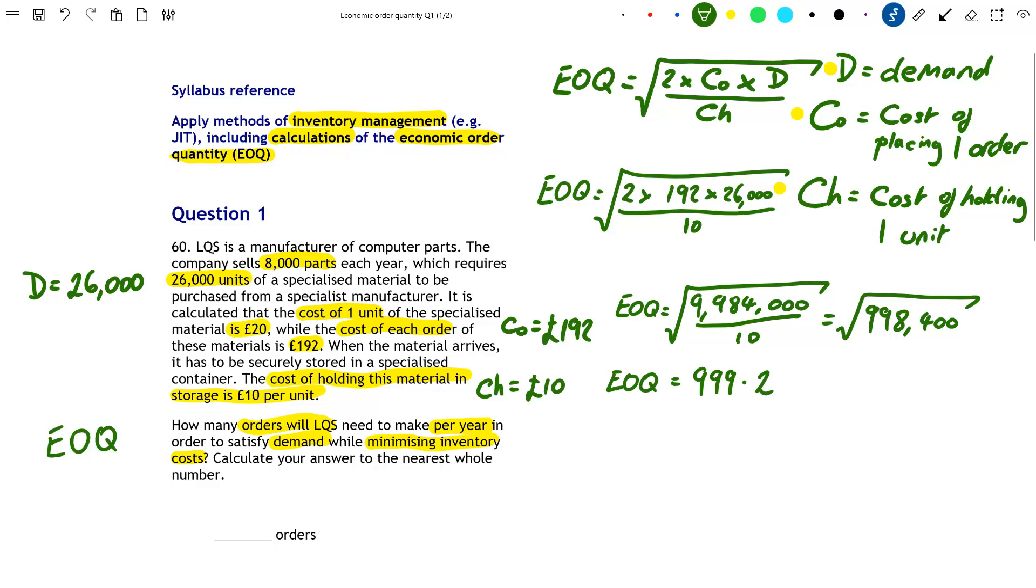Now the EOQ model tells us how many units LQS will need to purchase per order in order to minimize inventory costs. Well, we can't have 0.2 of a unit. They've got to be whole numbers. Imagine if you bought 0.2 of a phone, right? Doesn't happen. So we need to round this figure to 999, as that is the nearest whole number.